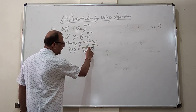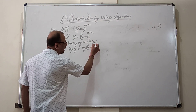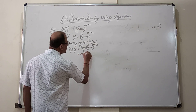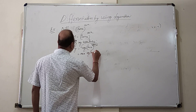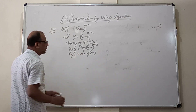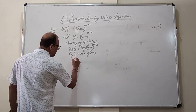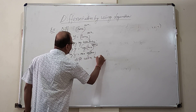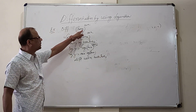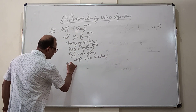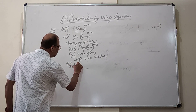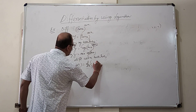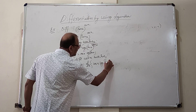We get log y equals log of sin x to the power cos x. Using the log power rule, cos x is shifted down, giving log y equals cos x · log(sin x). Again differentiating with respect to x on both sides, we get d/dx of log y equals d/dx of cos x · log(sin x).